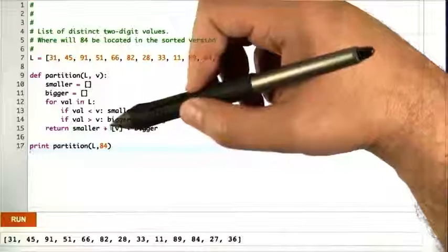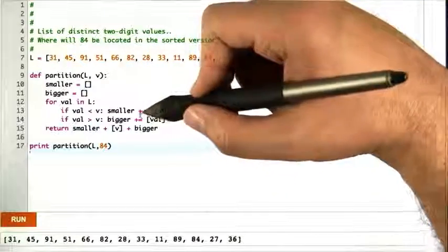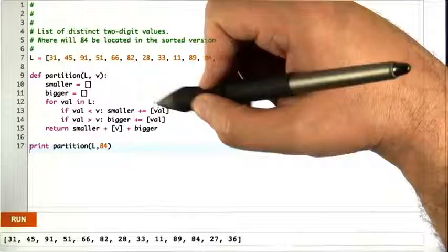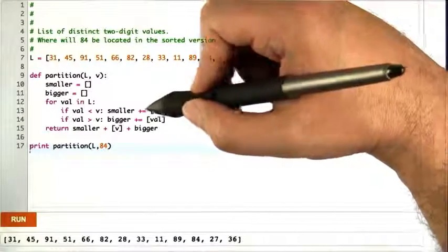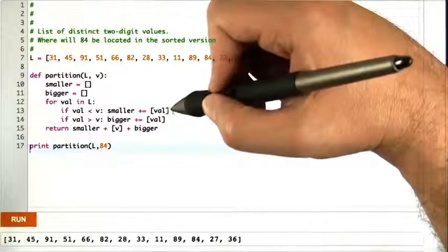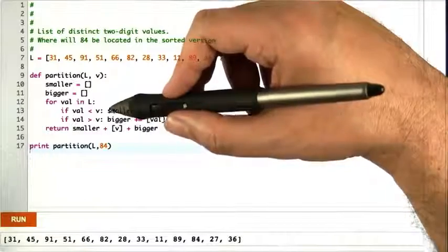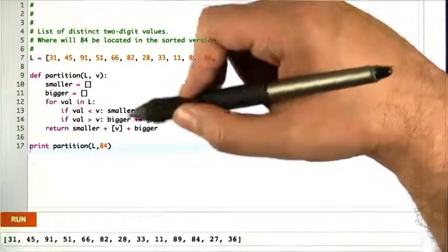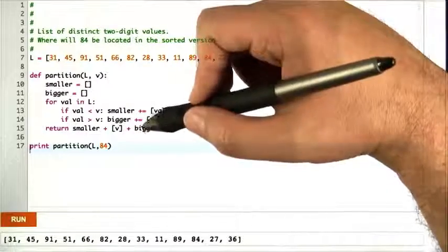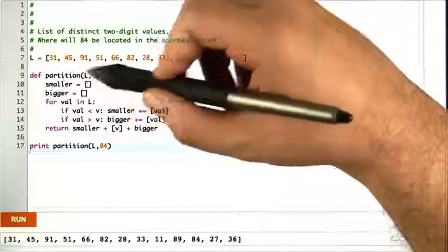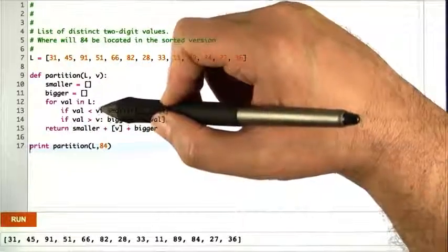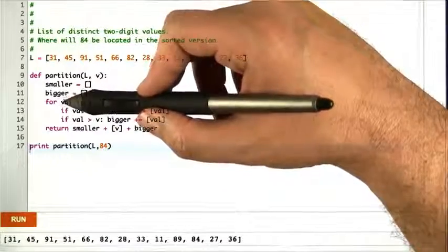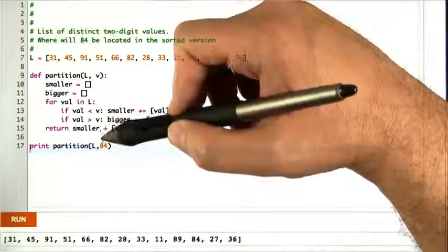And then we glue them all together. First the smaller, then v, then the bigger. Now, this sort of plus equals a list construct, it's not immediately obvious what the running time of this is in Python. In fact, I think it's probably not constant time, but you can create a version where each of these steps is constant time, so that this entire routine runs in big theta of n, because all we're doing is we're touching each of the values in the list to construct a new list.